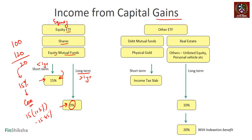For non-equity assets — debt mutual funds, real estate, physical gold, and others — short-term capital gains are taxed on the income tax slab of the person. If the person's income is already above 10 lakhs, this will be taxed at 30%; if it's between 5 and 10 lakhs, it will be 20%. The short-term capital gain from non-equity instruments simply gets added to the income slab.